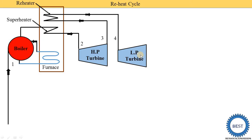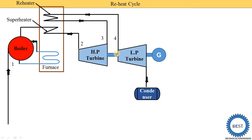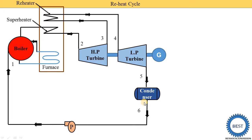Then this steam is again expanded in the low pressure turbine — LP means low pressure turbine. In this turbine, process four to five is carried out, which is the isentropic expansion process. Both turbines produce mechanical energy. The shaft of the turbine is connected to the generator. The steam coming out from the low pressure turbine is supplied to the condenser, where isobaric heat rejection is carried out. Then it is supplied to the pump, and from the pump, water is supplied back. This is the basic schematic diagram of the reheat cycle.